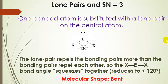So this bond angle is distorted to less than 120 degrees, and we call this molecular shape bent — it just looks like a bent molecule. We do not include the lone pair in the actual naming; we only name the molecule's shape after the bonded atoms. You can see atoms, but you can't see lone pairs, so we name the geometry based on atom positions.